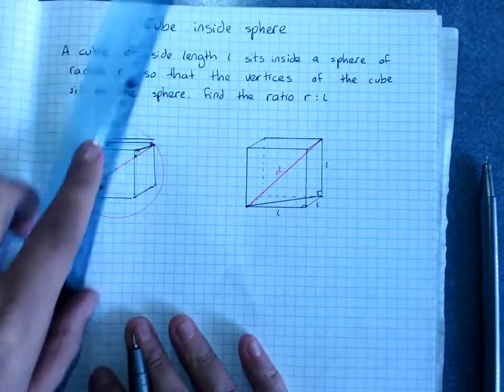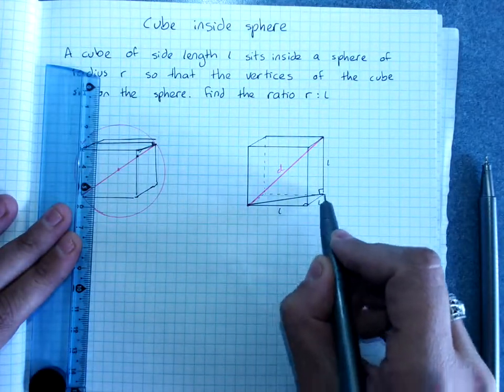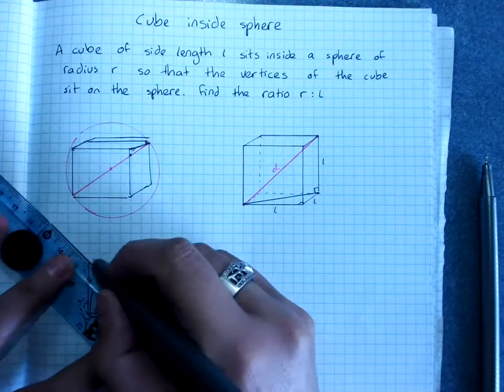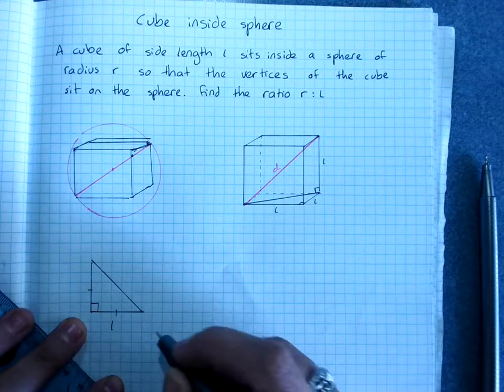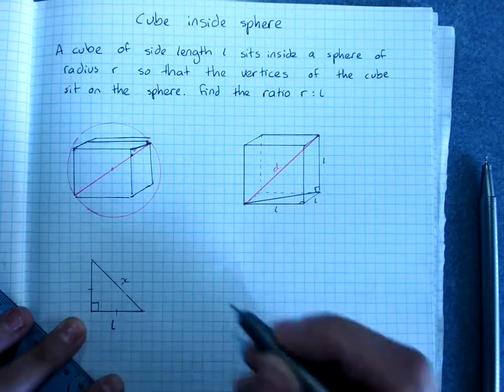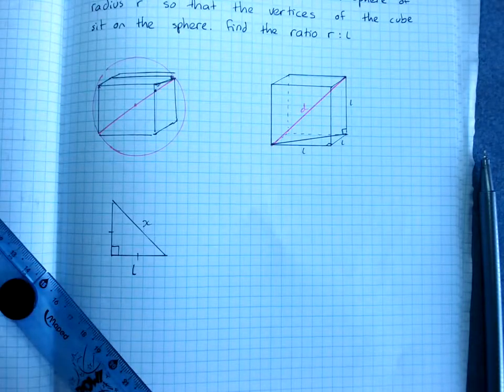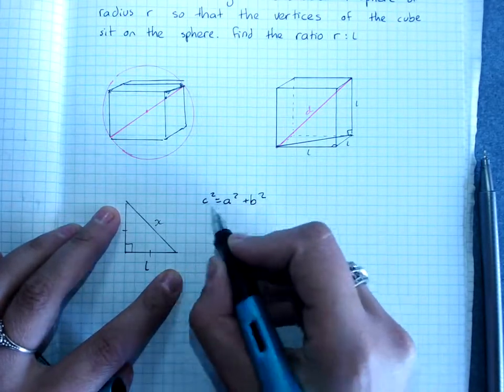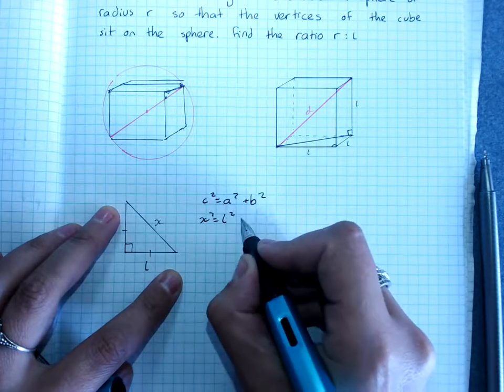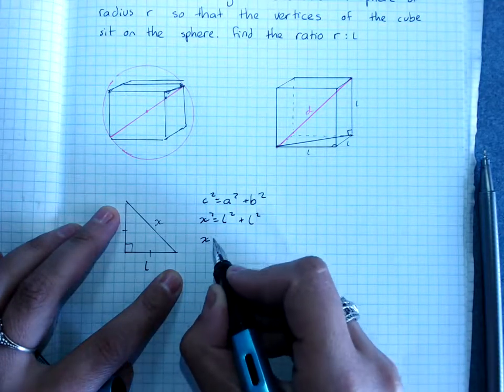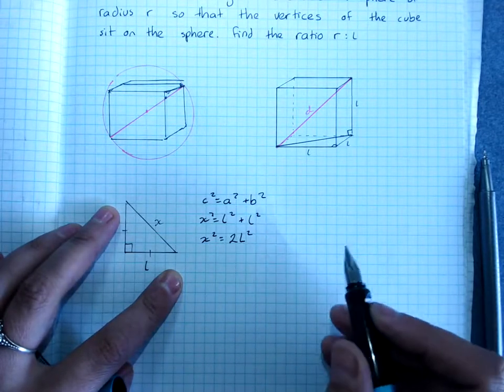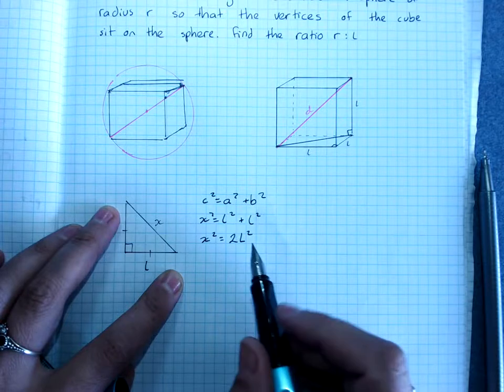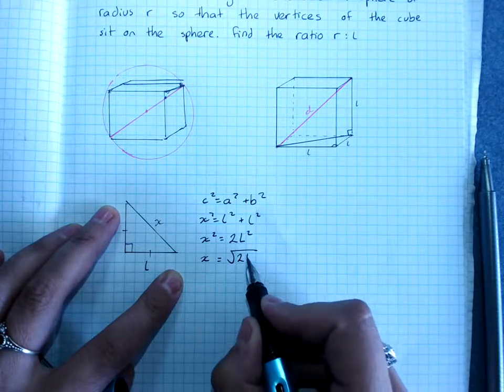If we get stuck, redraw the triangle. So I'm starting with this bottom triangle, L by L. And I'm finding this side, which I'll call X. So C squared equals A squared plus B squared. X squared is L squared plus L squared. So X squared is 2L squared.